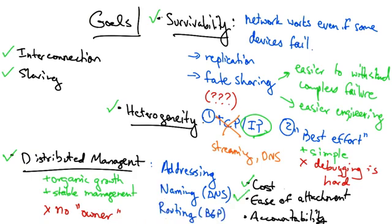Accountability, or the ability to essentially bill, was mentioned in some of the early papers on TCP/IP, but it really wasn't prioritized. Datagram networks can make accounting really tricky. Phone networks had a much easier time figuring out how to bill users. Payments and billing on the internet are much less precise, and we'll talk about these more in later lectures.